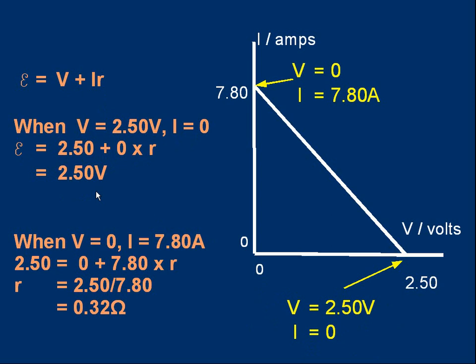We can then repeat the procedure. We've got the value of v and i at the top point. Just put the numbers in the formula. E is v plus i r. I know e already - it's 2.50. That equals v, which is 0, plus i r, which is 7.80 times r. And that gives us r is 2.50 over 7.80, which gives r is 0.32 ohms.